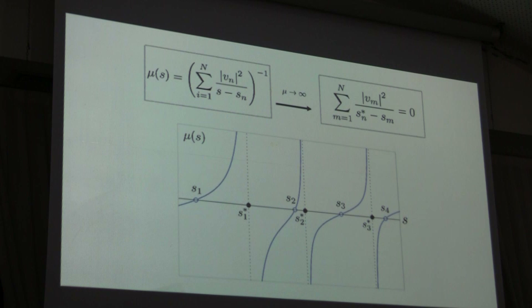If you have two degenerate eigenvalues, one of them will not move and the other will move. Which part of the subspace moves is chosen by the projector that you have.